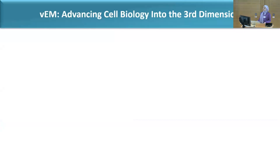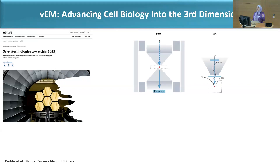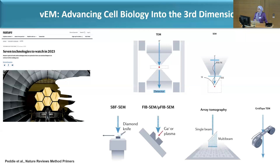Let's start by talking about why volume electron microscopy is important. It was actually nominated by Nature as one of the seven technologies to watch in 2023. For a long time we used classic techniques that only captured the surface of tissue and small amounts of sample, but now we can use SBFSEM and FIB-SEM to get full 3D dimensions of images and samples.